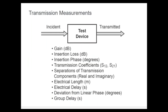Collecting the different transmission measurements: gain and insertion loss are very common scalar quantities with no phase. But the VNA can also measure phase, and the full transmission coefficients are the complex representation carrying both magnitude and phase. We can separate real and imaginary parts, look at electrical length in terms of distance and time, and look at how much phase deviates from linear — indicating linearity quality and group delay.